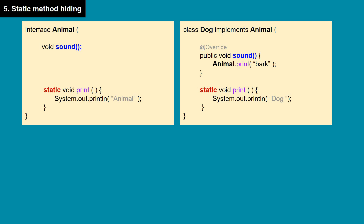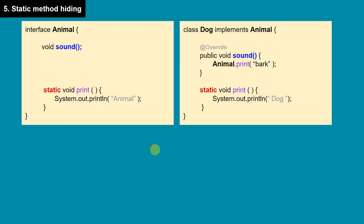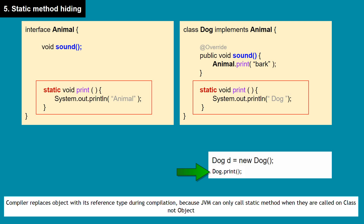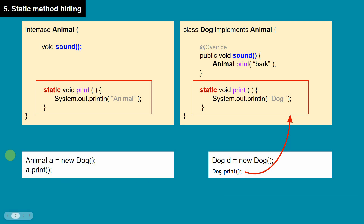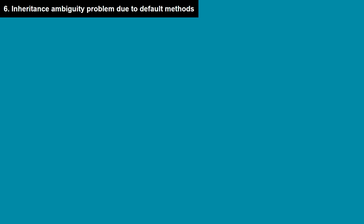Now let's consider static methods in interfaces. Animal interface has a static method, and Dog implementation class also has a static method print used as a helper method. If we call d.print on a Dog reference, it becomes Dog.print. If we write Animal a = new Dog and call print, it becomes Animal.print, so the method from Animal is called.